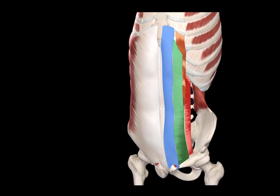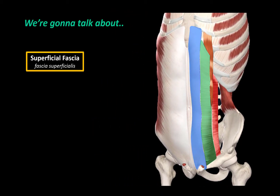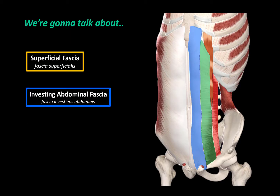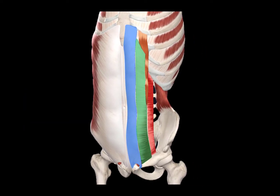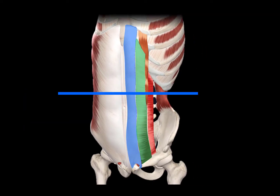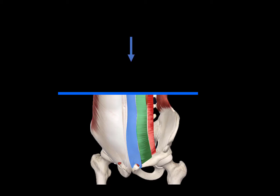So in this video, we're going to go through the superficial fascia, the investing abdominal fascia, and the endo-abdominal fascia. To do that, we will make a transverse cut of the abdomen, remove the upper half, and look at it from this perspective. And now we're going to try to draw all the structures and go through them as we do that.